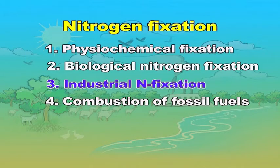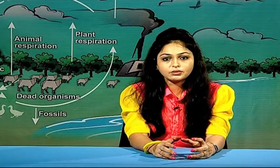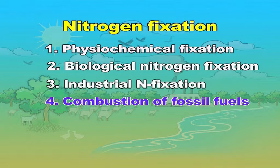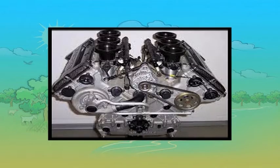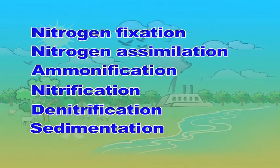The third type is industrial nitrogen fixation. Under great pressure at a temperature of 600°C with an iron catalyst, hydrogen and atmospheric nitrogen combine to form ammonia. The fourth type is combustion of fossil fuels. Automobile engines and thermal power plants release various nitrogen oxides.